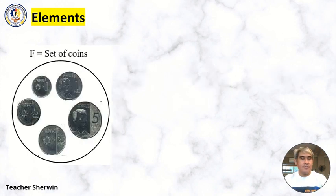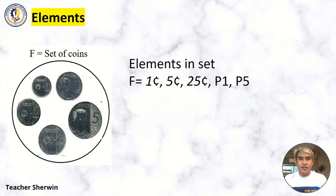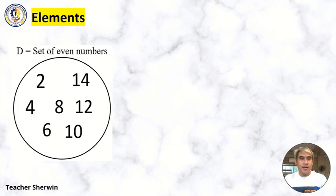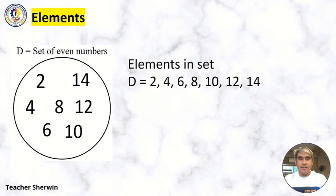Set F, set of coins. So what are the elements? Elements in set F are 1 cent, 5 cents, 25 cents, 1 peso, and 5 pesos. How about in set D, set of even numbers? Elements in set D are 2, 4, 6, 8, 10, 12, and 14. So those are the elements.